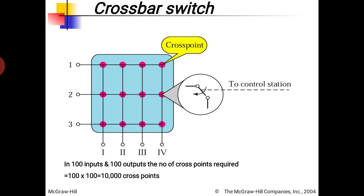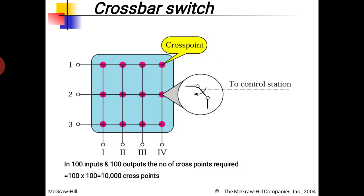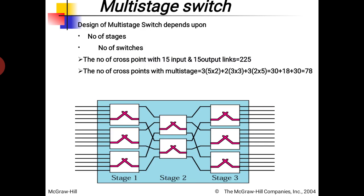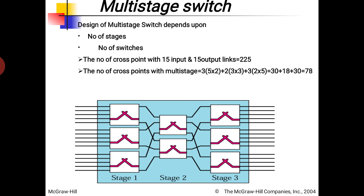The next type of space division switching is the multi-stage switch. As the name indicates, rather than one large crossbar, the job is divided into multiple stages. The design of a multi-stage switch depends on the number of stages and the number of switches at each stage. In this example, we have a three-stage multi-stage switch.